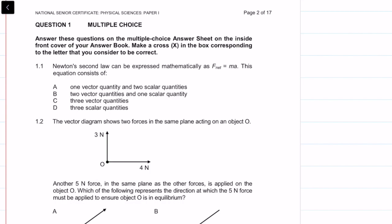Question 1.1 says Newton's second law can be expressed mathematically as F_net equals ma. This equation consists of — we need to know the number of vectors and scalars. Looking at the equation: F_net is a vector, m (mass) is a scalar, and a (acceleration) is a vector. So we have two vectors and one scalar.